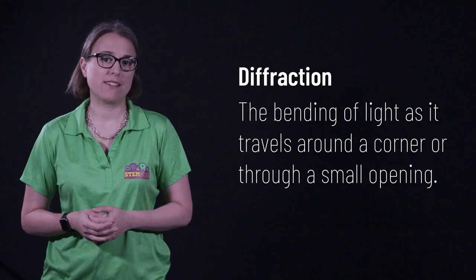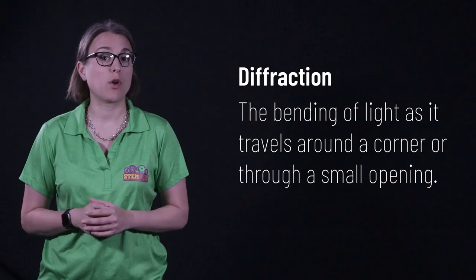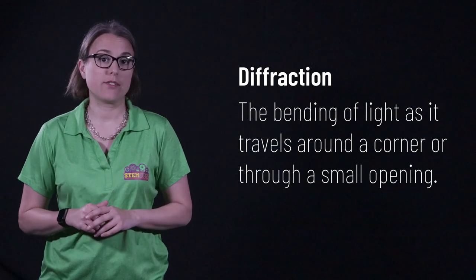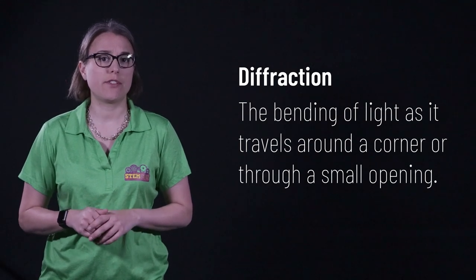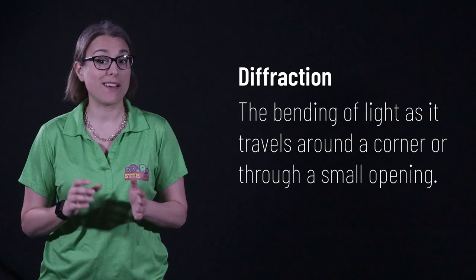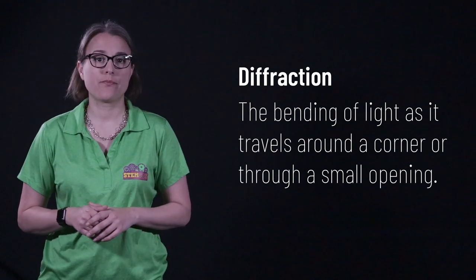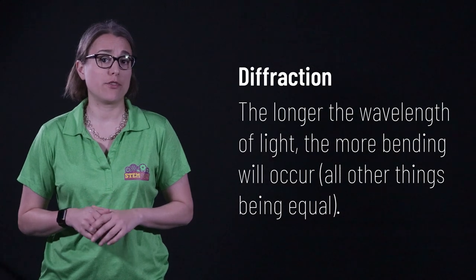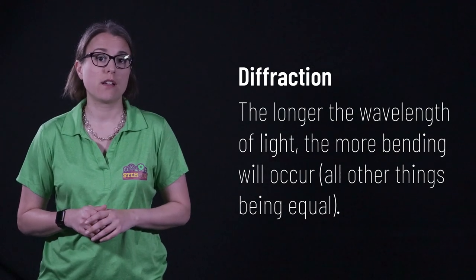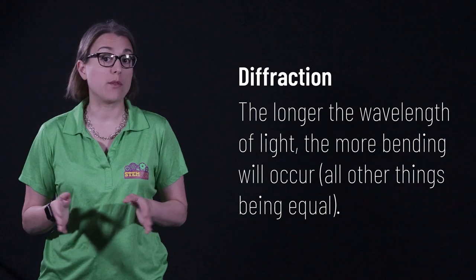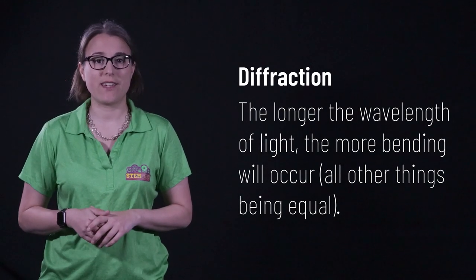Diffraction is a bending of light as it travels around a corner or through a small opening. This happens with all light waves, but only creates a noticeable effect when the size of the opening is on the same size scale as the wavelength of the light. The amount of bending that occurs in diffraction has to do with the wavelength of the light — the longer the wavelength, the more bending will occur with all other things being equal. Diffraction occurs not only with visible light, but all waves. This includes water waves in a ripple tank — we can see that the smaller the opening, the more spreading out occurs of the water waves.